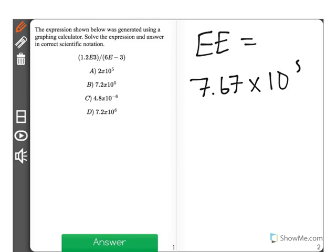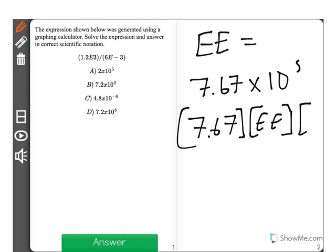But what's important to note is when you press the ee button, it actually only writes e in the graphing calculator. So that means that what we have here is we have 1.2 times, remember e means in scientific notation, times 10 to the 3rd.